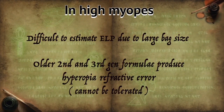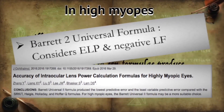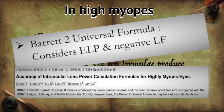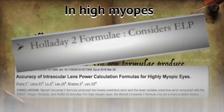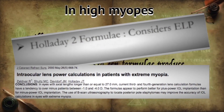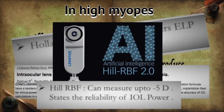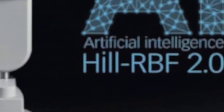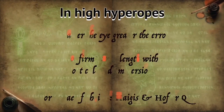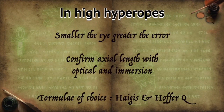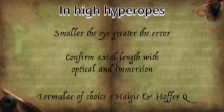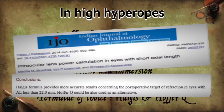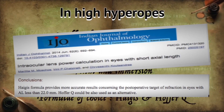The next scenario is biometry in high myopia and hypermetropia. In case of high myopia, older second and third generation formulas produce a hypermetropic refractive error, which should be avoided by all means. Studies prove that Barrett's Universal II formula, Holladay 2, and Hill-RBF formulas are effective in high myopes. In case of high hyperopes, the smaller the eye, the greater the error. Thus, we need to confirm the axial length using optical as well as immersion biometers. The IOL formula of choice here is Haigis and Hoffer Q.